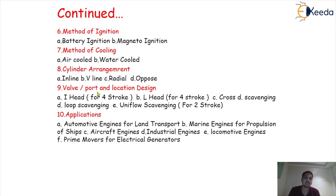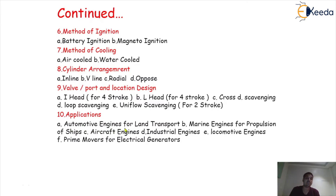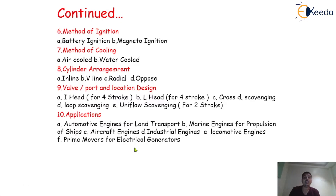Finally, classification is based on application or its use. The different varieties of engines are there according to different applications: automotive engines used for land transport, marine engines for the propulsion of ships, aircraft engines, industrial engines, locomotive engines, and heavy prime movers for electrical generators. These are a few applications where we can use the different varieties of engines.